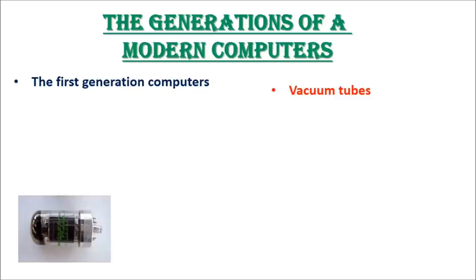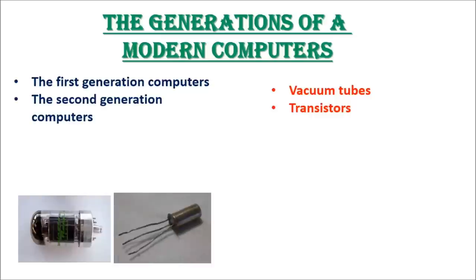Second generation computers used transistors in place of vacuum tubes. Computers became smaller and faster. Electricity consumption became lower, generated less amount of heat.